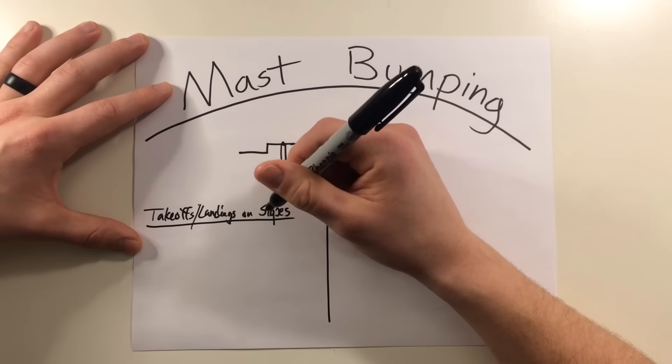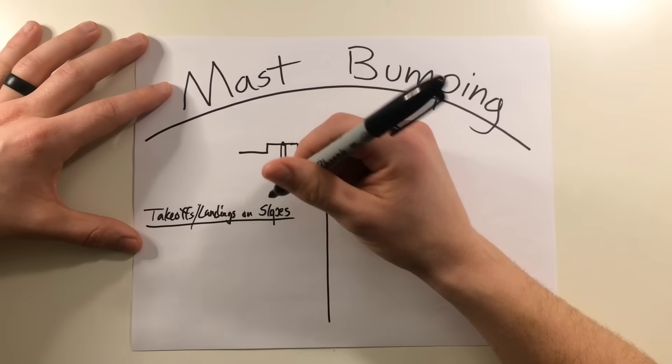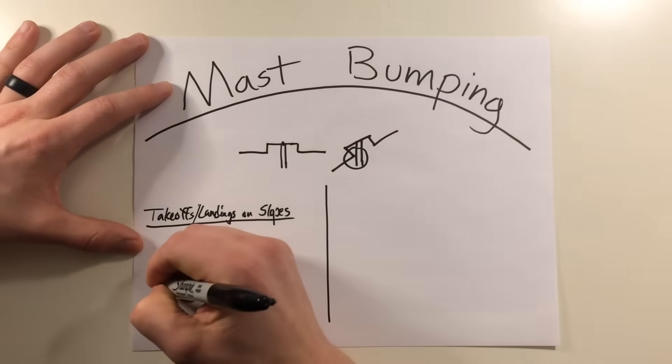Taking off and landing from slopes, if a helicopter attempts to take off or land to or from a slope, there can be points where the cyclic limits may be reached. So what does that look like?